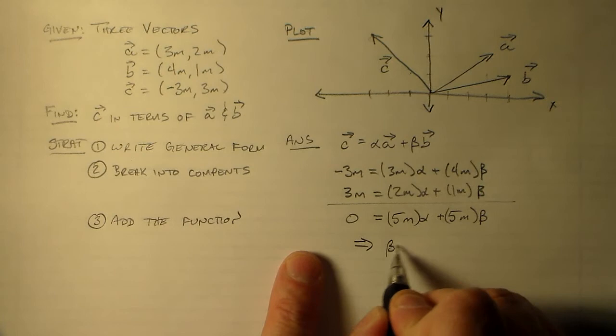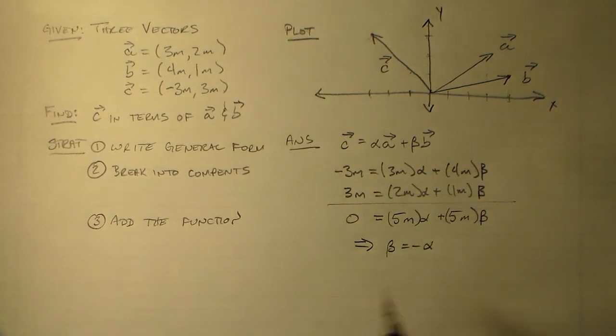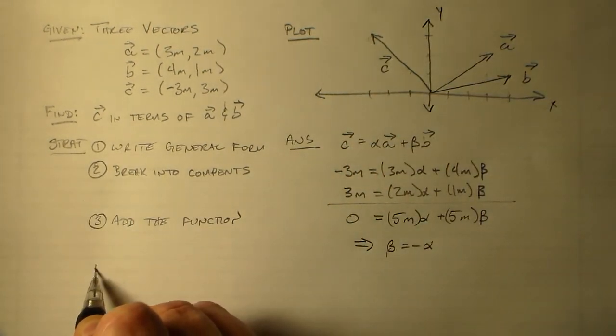What does that mean? Well, what that means is that beta is equal to minus alpha. Right, so we have the alpha beta thing and it's actually some sort of a line like that. Fairly suggestive, actually.